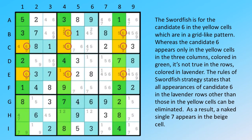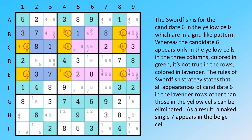colored in green, it's not true in the rows, colored in lavender. The rules of swordfish strategy states that all appearances of candidate 6 in the lavender rows other than those in the yellow cells can be eliminated.